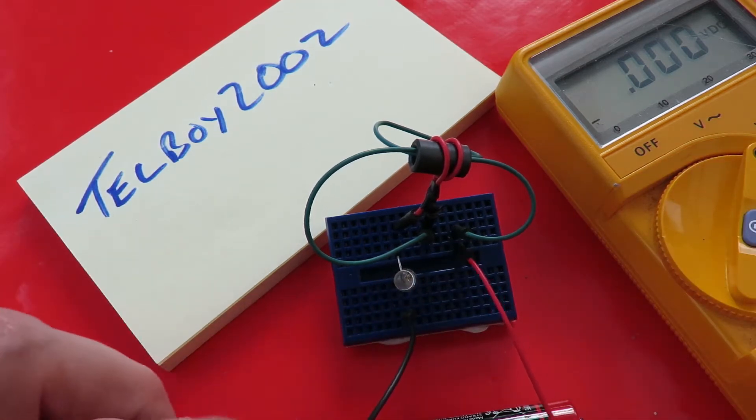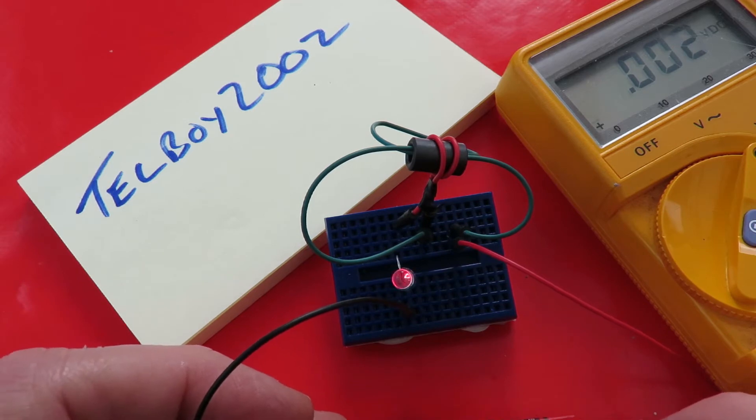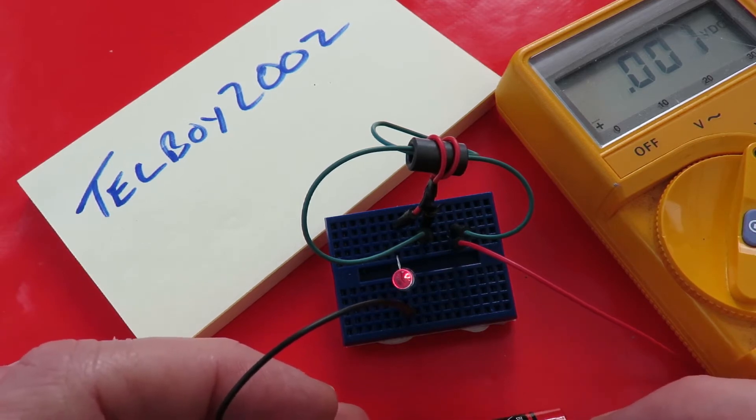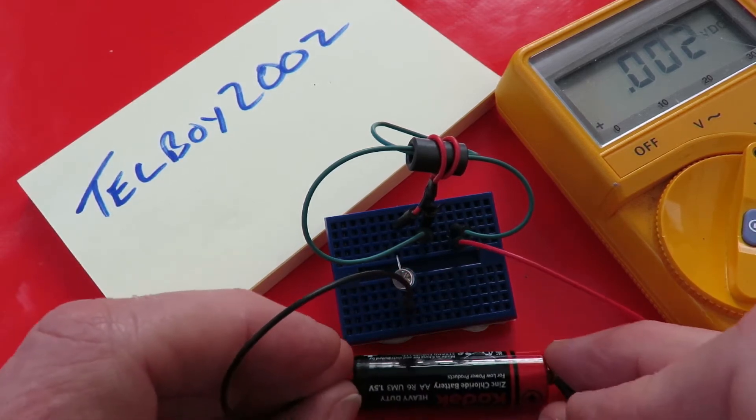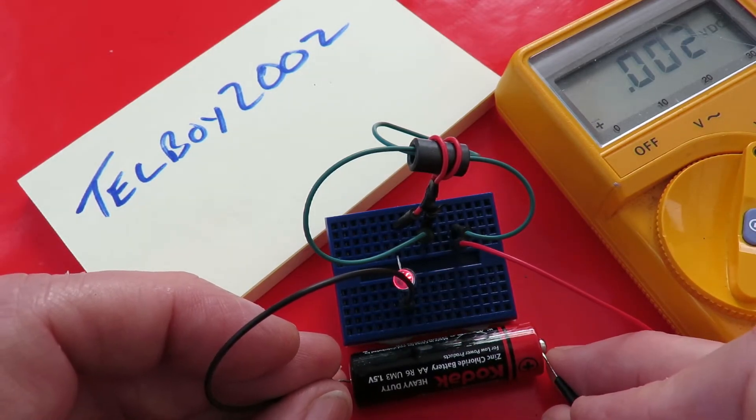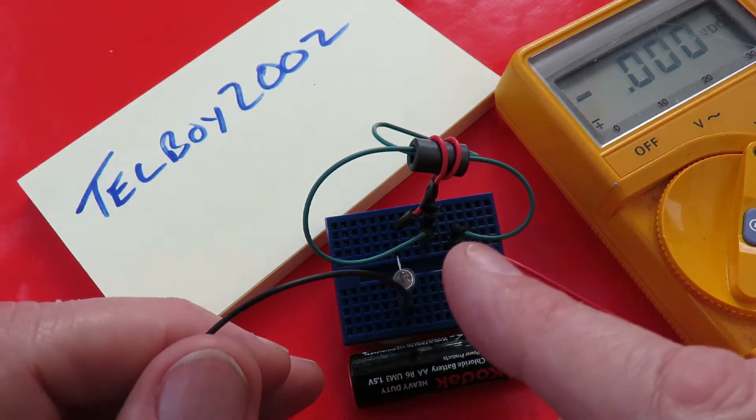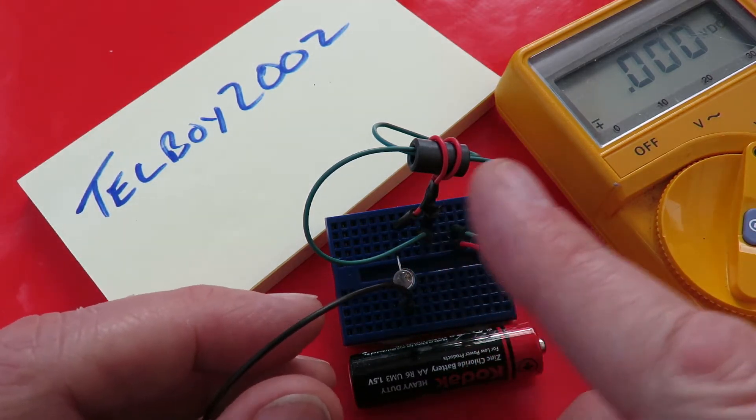But he took the transistor out and he found his LED was still alight. So we've got a 1.5V battery there and the LED is lighting without a transistor doing a pulsing effect.